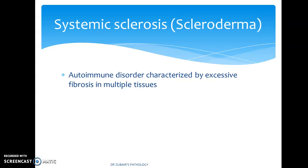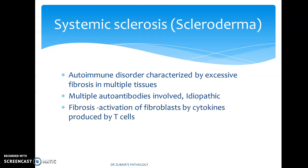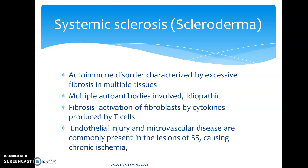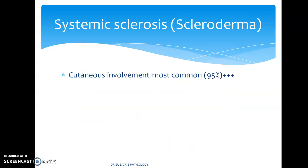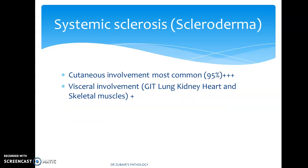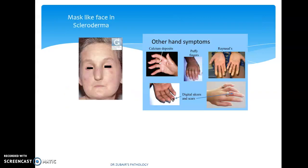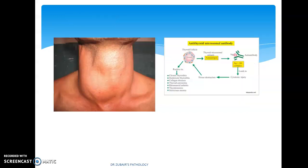In scleroderma, there is an autoimmune disorder characterized by excessive fibrosis in multiple tissues. Multiple autoantibodies are involved, with idiopathic fibrosis. Activation of fibroblasts by cytokines produced by T-cells is seen, leading to endothelial injury and microvascular disease, with both cutaneous and visceral involvement. A characteristic mask-like facies is seen in scleroderma.